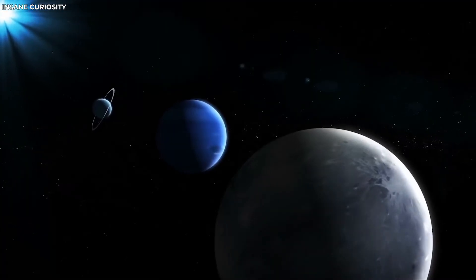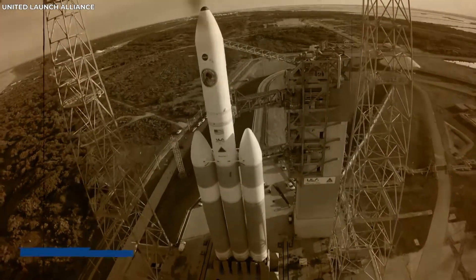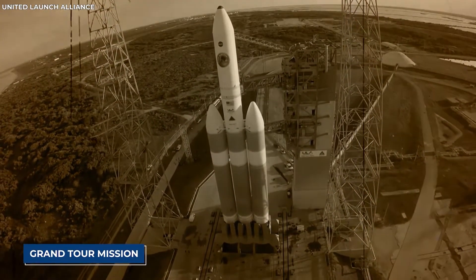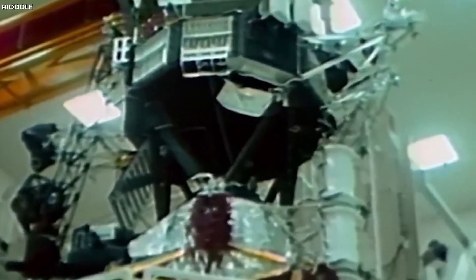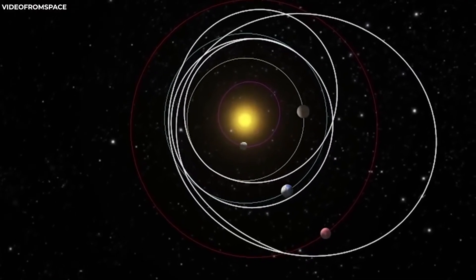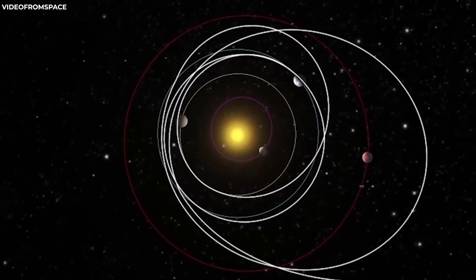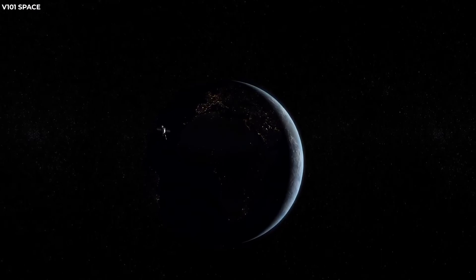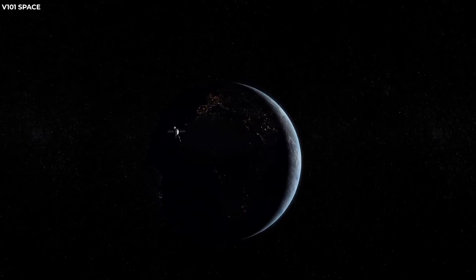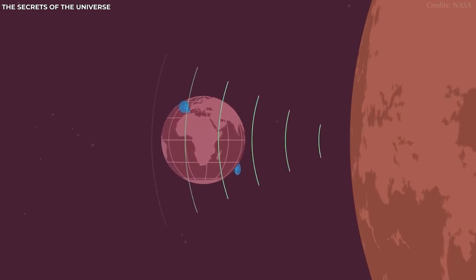Recognizing the potential of this planetary alignment, Flandreau proposed a Grand Tour mission. This mission would send a spacecraft on a journey through the solar system, using gravitational assists to visit all four of the outer planets. The trajectory he proposed would allow a spacecraft to fly by each planet in succession, gathering data and sending it back to Earth.